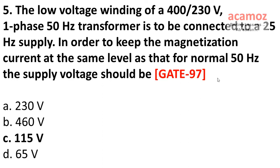The low voltage winding of a 400/230 volt single-phase 50 Hz transformer is to be connected to a 25 Hz supply. In order to keep the magnetization current at the same level as that for normal 50 Hz, the supply voltage should be? This was asked in GATE 1997. The answer is 115 volts.